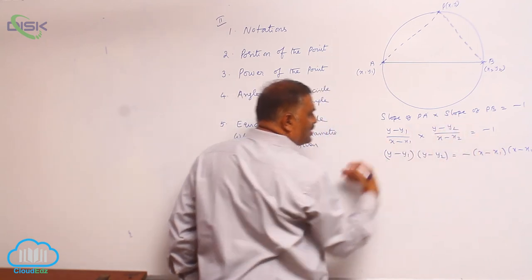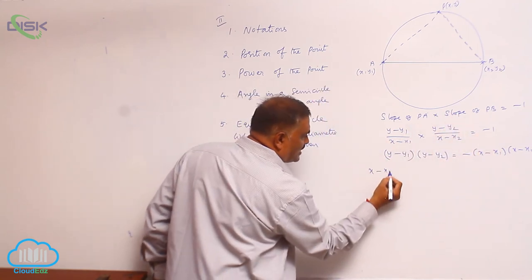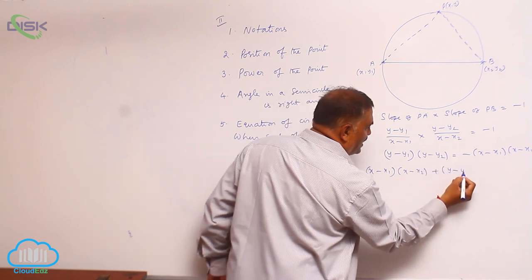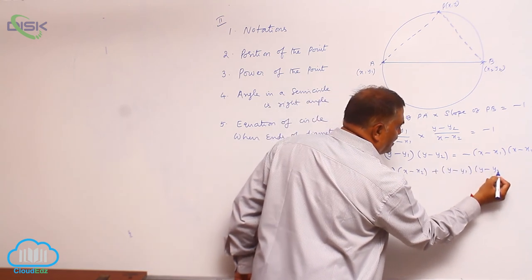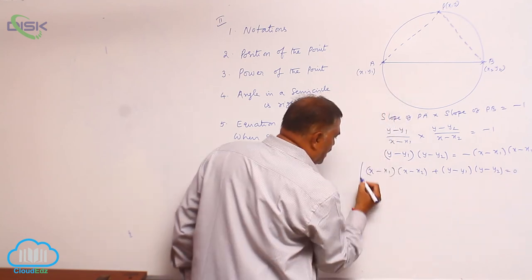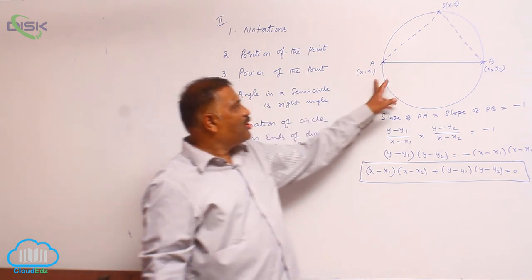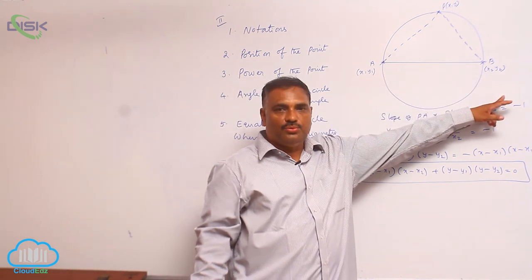Sending all the terms to this side: x minus x₁ into x minus x₂ plus y minus y₁ into y minus y₂ equal to zero. Now this is called equation of the circle when the endpoints of diameter are given to you.